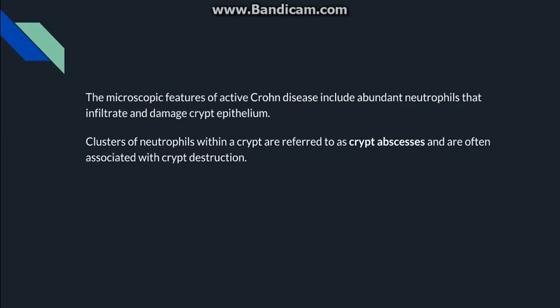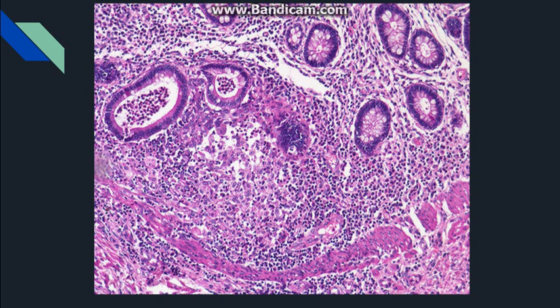The microscopic feature characteristic of active Crohn's disease is the presence of abundant neutrophils. Due to interleukin-17 activation, neutrophils are recruited, enter and damage the crypts. When neutrophils are present inside the crypts, this is known as a crypt abscess, which is diagnostic of Crohn's disease. In the image, neutrophils can be seen inside the crypts forming a crypt abscess.